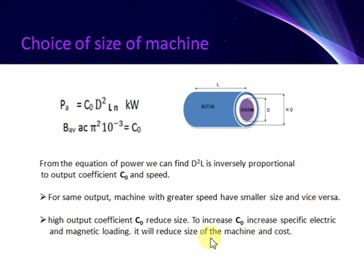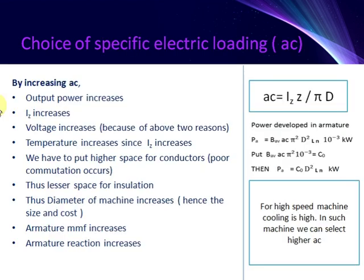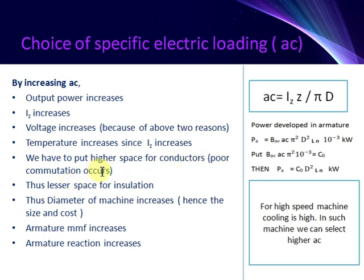Choice of specific electric loading: by increasing AC, output power increases, current per conductor Iz increases, and voltage increases. Because of these two reasons, temperature increases. Since Iz increases, we have to put higher space for conductors, so there is a chance for poor commutation, thus lesser space for insulation. Since higher space is needed between conductors, the diameter of the machine increases, hence the size and cost also rise.